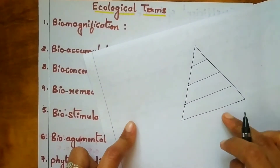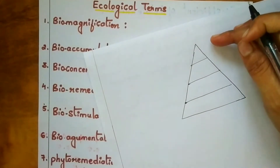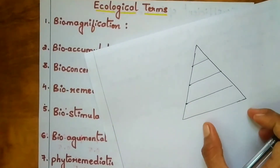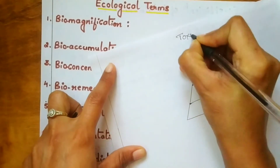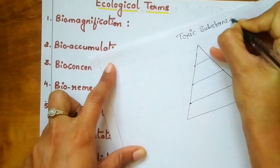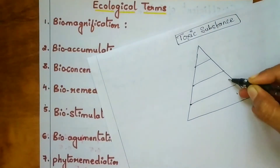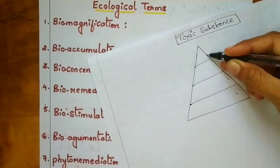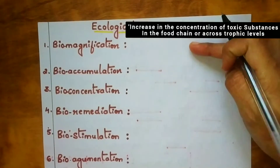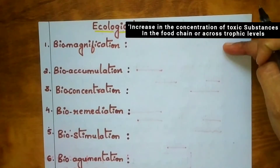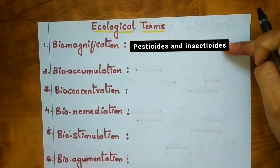In trophic levels, first there are producers, then primary consumers, then secondary consumers, then tertiary consumers, and finally top consumers. What you need to remember is: if there is an increase in the concentration of toxic substances in the food chain or across the trophic levels, that is called biomagnification. It is caused by non-biodegradable substances, especially pesticides and insecticides.